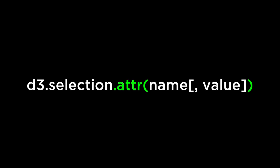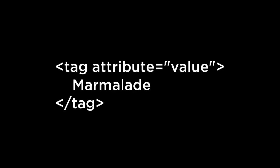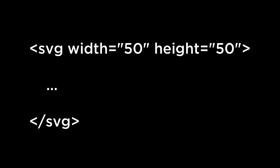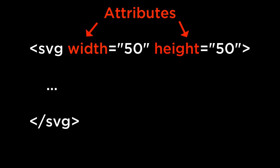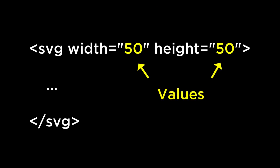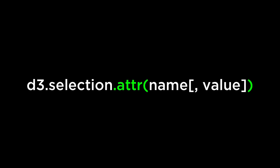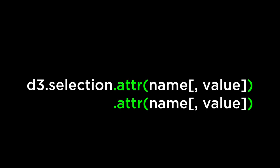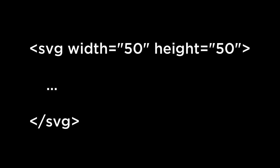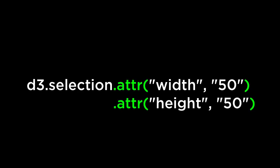Next, let's look at the attribute operator. This operator inserts an attribute and a value, if specified, into the elements in the selection, and then returns a selection. The structure of HTML markup is a tag containing attributes that have values. In the case of an SVG statement, the tag is SVG, the attributes are width and height, and the values are 50 and 50. D3 allows us to add a tag attribute and its value to a given selection, but only one attribute and one value can be added at a time. To add two attributes, you will have to use the chain syntax, which means we can convert the SVG statement accordingly.